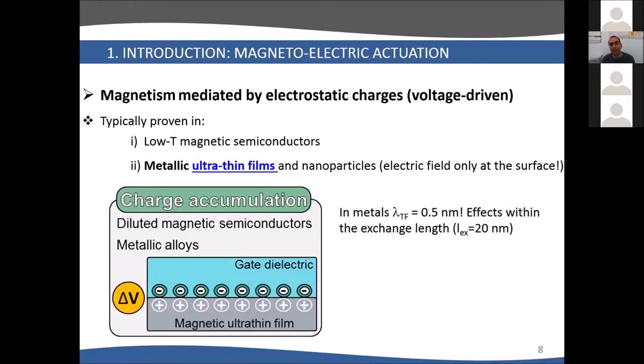Another way to control magnetism with voltage is to take advantage of accumulation of electrostatic charges. This was started around the year 2000 in low temperature magnetic semiconductors. Then in 2007, it was shown for the first time in metallic ultra-thin films, where you can generate an electric field that modifies the electronic structure. This causes changes in the magnetic anisotropy energy. However, in metals, the penetration of electric field is very much at the surface, screened in the Thomas-Fermi length, which is only 0.5 nanometers.